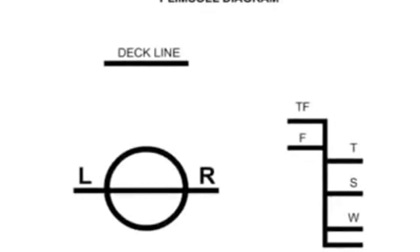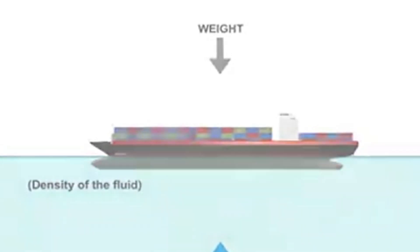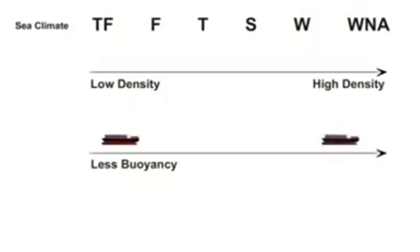There are many load line marks for different density of water or different sea climates. It is important to know that higher the density of water, stronger is the upward buoyant force. The order of less dense water to high dense water is as shown. This means one can load more cargo for dense water.